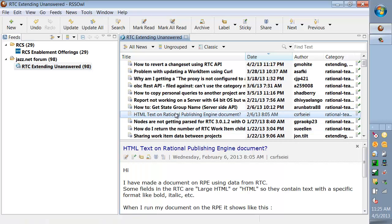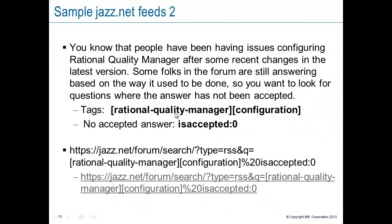So let's go back and look at another example. Just to be clear, this is a hypothetical example. But suppose you work on RQM and you've recently made some improvements in how configuration is done. Not everyone is using the same versions or has caught up and learned how to use the new options yet. So you want to look for RQM questions about configuration where there isn't an accepted answer yet, because that could mean someone's given an answer that's not correct — and you want to find those questions, review them, and make sure you steer people towards the new capabilities.